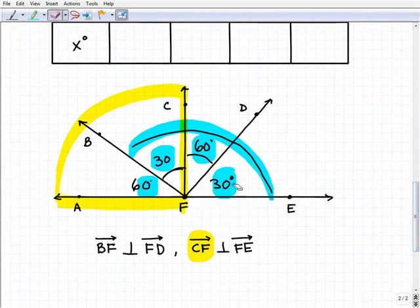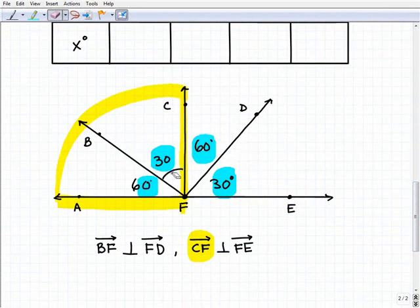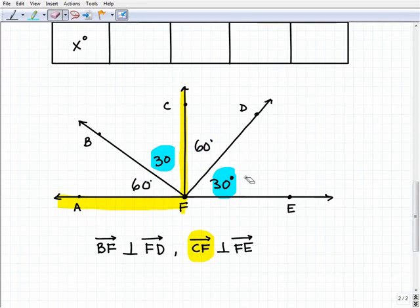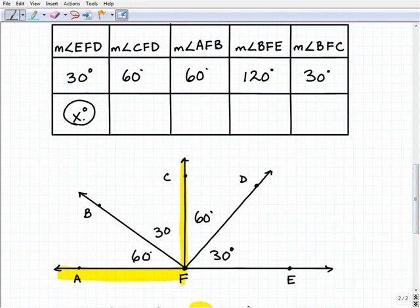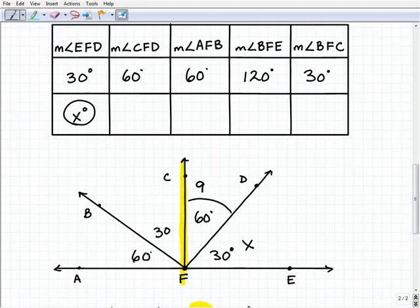Let's consider the problem now when EFD is X degrees, so this is going to be X, not 30. How do we get this first angle, CFD? We knew that it was a complementary angle to 30 degrees, so we took 90 degrees and took away 30 degrees. This angle is going to be 90 minus X, because these are complementary angles.